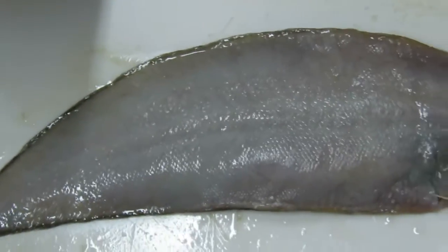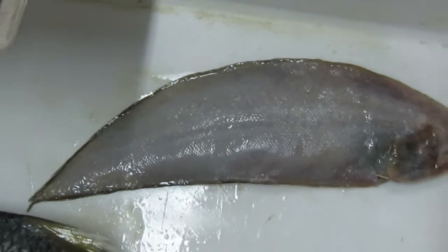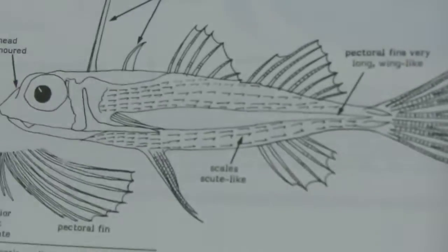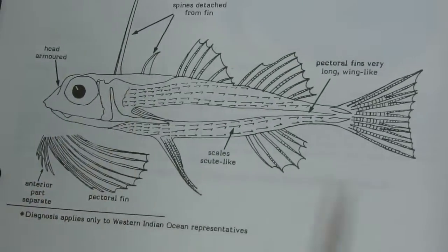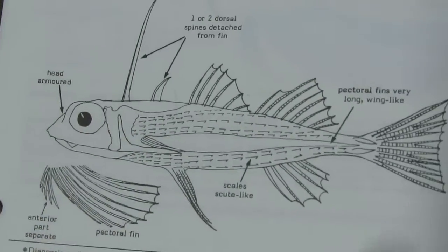Next family is Dactylopteridae. The lateral line is present or absent — maybe present or absent.